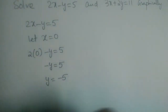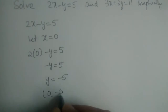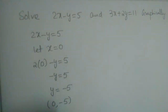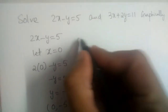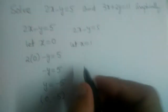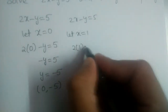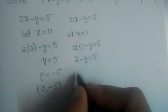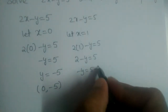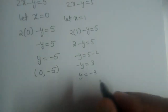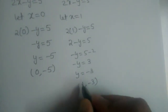So y is equal to minus 5. The point is 0 comma minus 5 — this is one solution for this equation. Now let us substitute x is equal to 1. We get 2 into 1 minus y is equal to 5, which gives 2 minus y is equal to 5, so minus y is equal to 3, and y is equal to minus 3. The point is 1 comma minus 3.